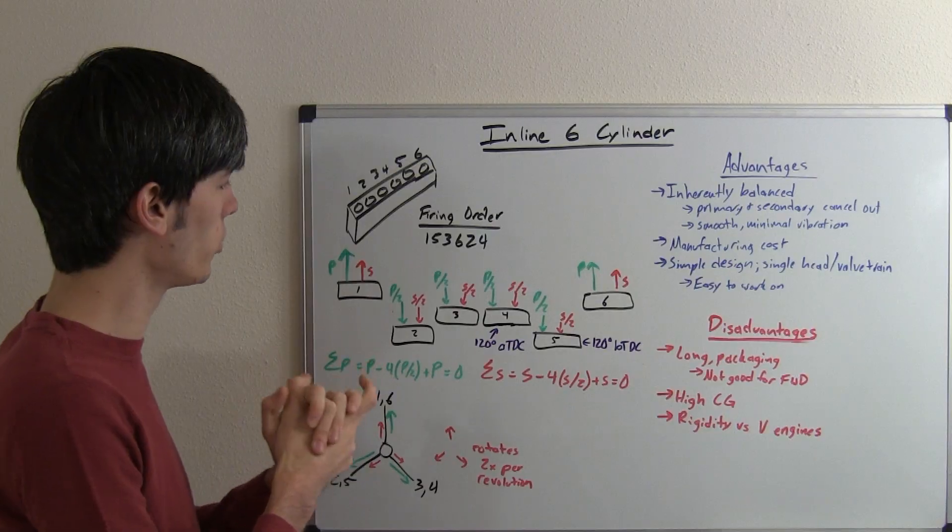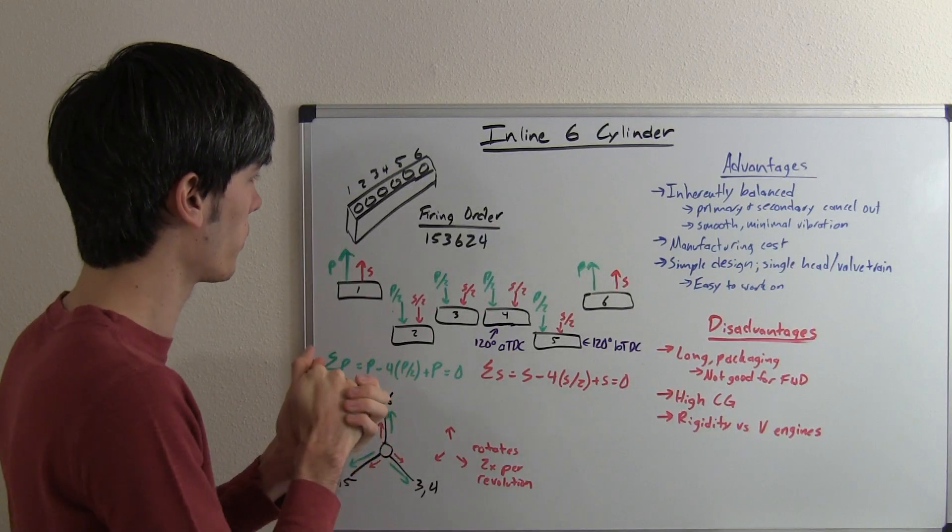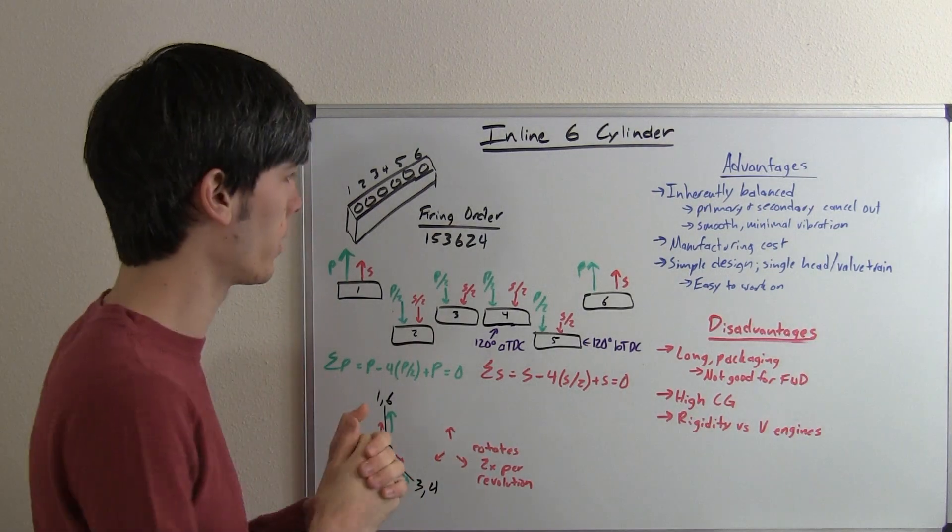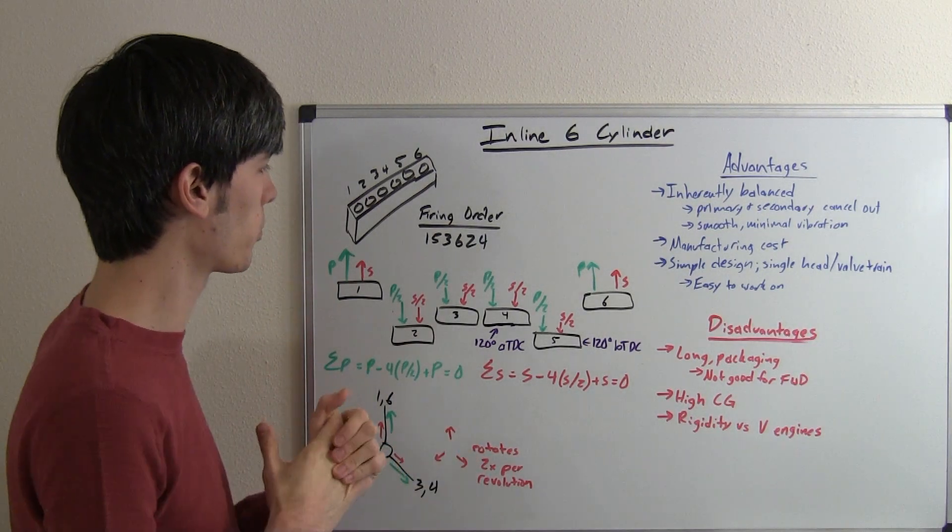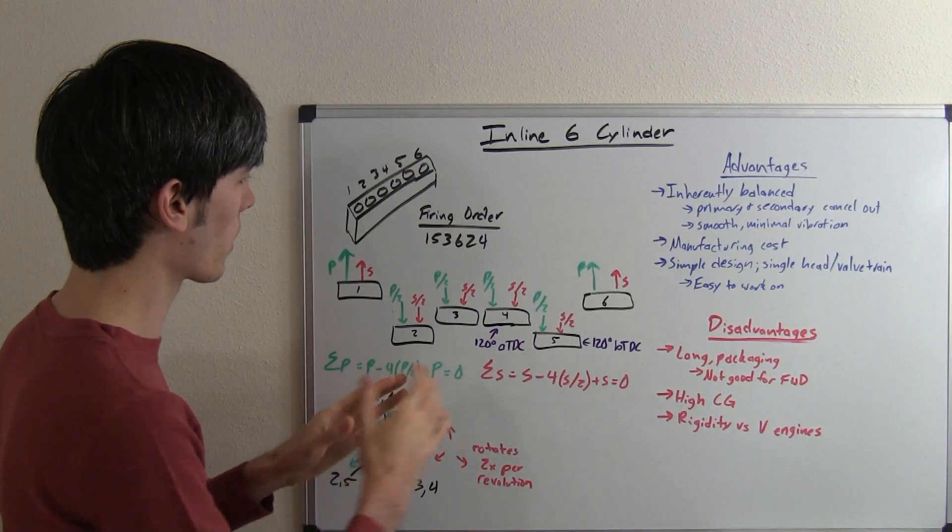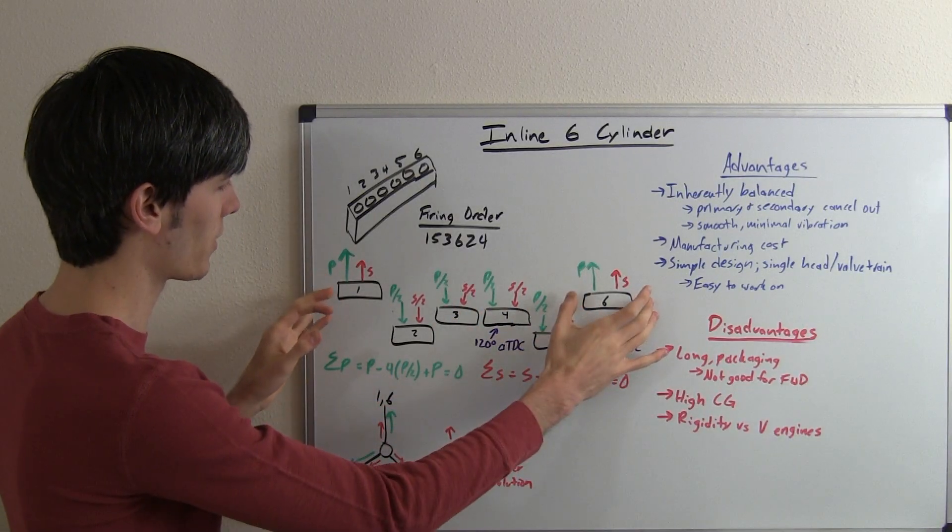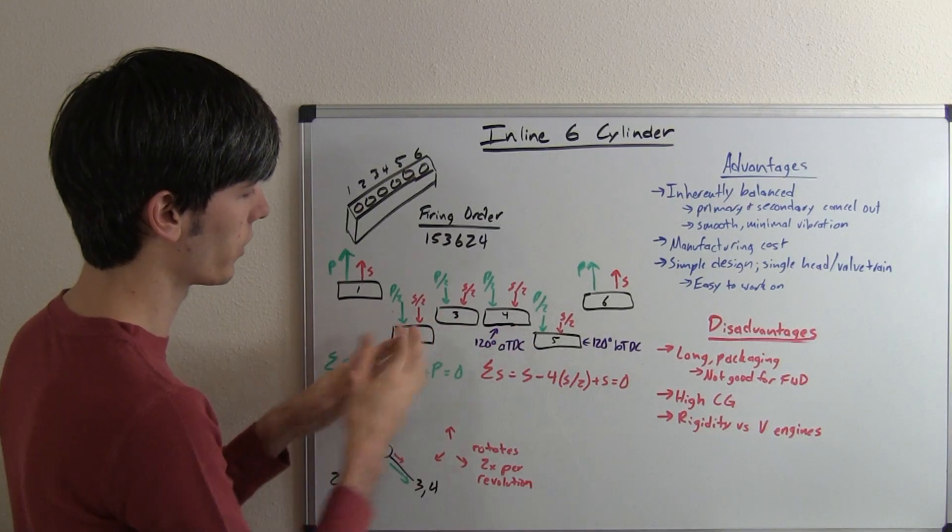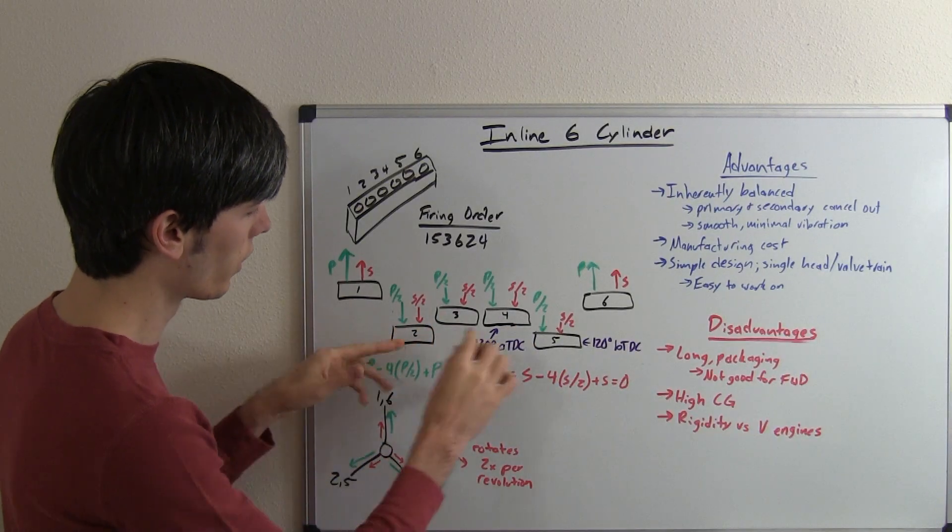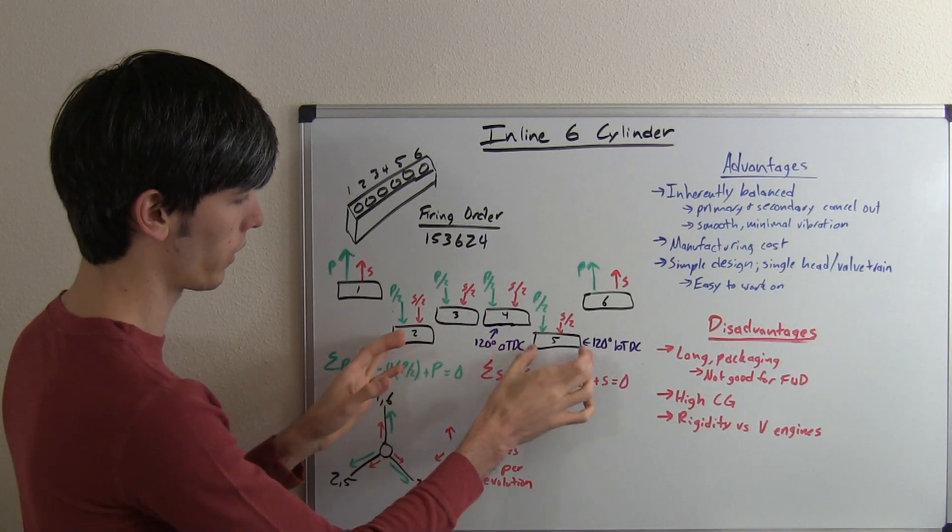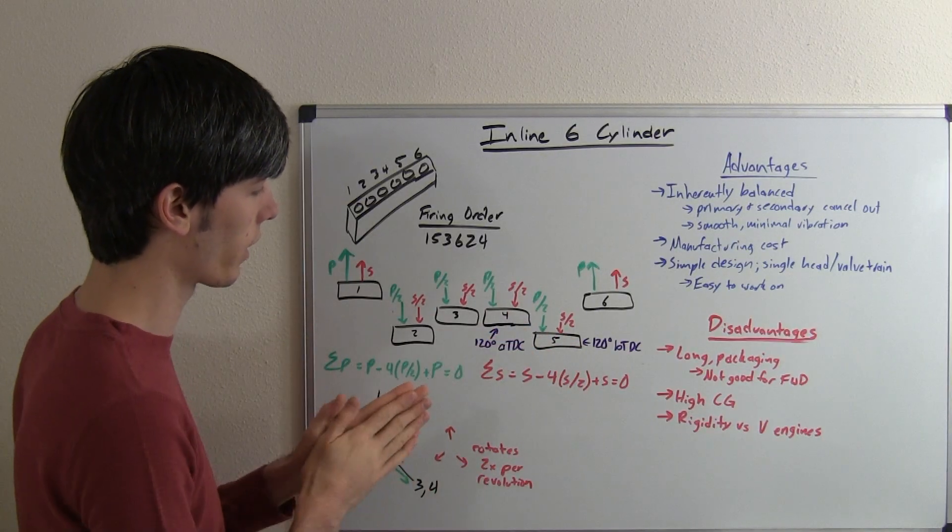So the reason you do this is to balance out all the forces and the firing order. If you've watched my videos on engine balance, you know all about these primary and secondary forces. But basically what we've got going on is this one and six in this scenario, we're going to have them at top dead center and then the rest of our cylinders are going to be 120 degrees. So these are really all inline, the only reason I staggered them a little bit was to show that these two move together and these two move together.